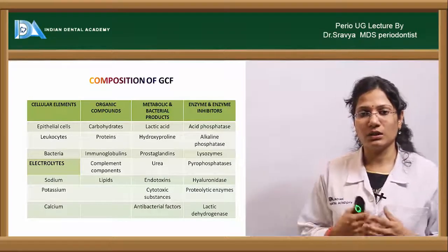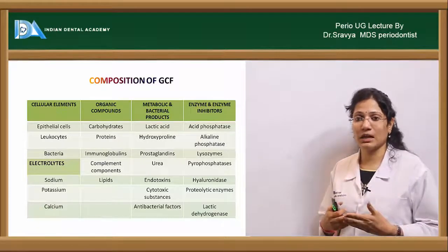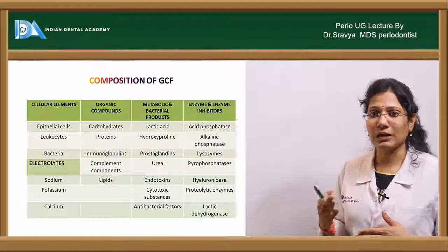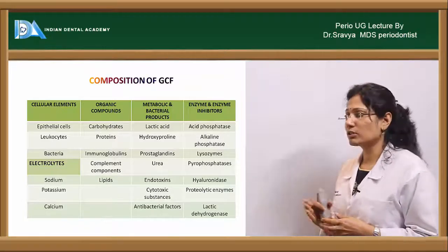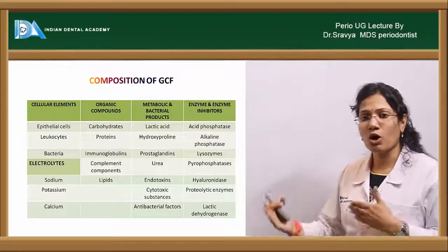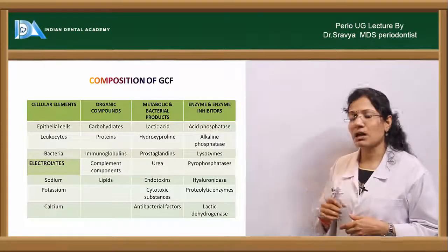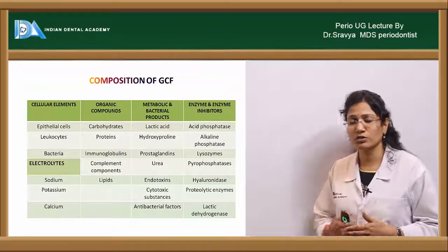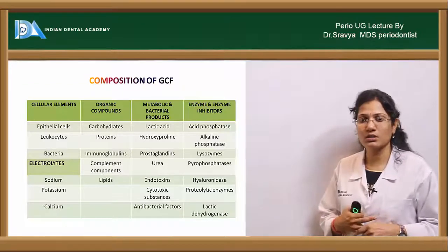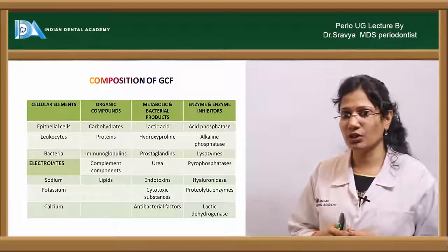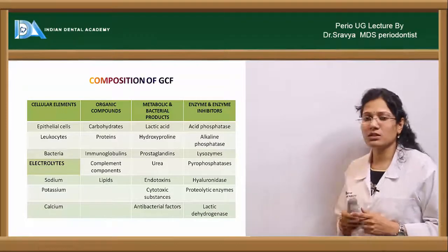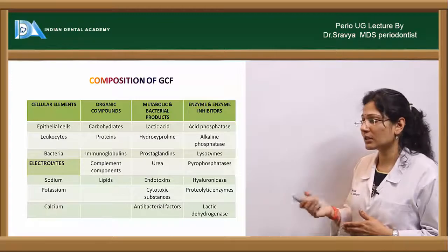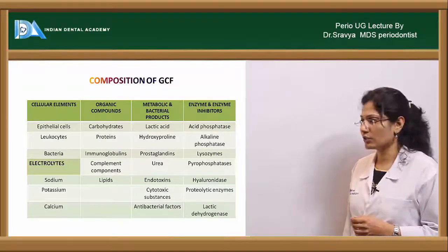Cellular elements of GCF include leukocytes, bacterial cells, and epithelial cells. Electrolytes include sodium, potassium, and calcium. Organic compounds include carbohydrates, proteins, immunoglobulins, complement components, and lipids. Metabolic and bacterial products include lactic acid, prostaglandins, urea, endotoxins, and cytotoxic substances. Enzymes and enzyme inhibitors include alkaline phosphatase, acid phosphatase, lysozymes, pyrophosphatases, hyaluronidases, proteolytic enzymes, and lactic dehydrogenases.